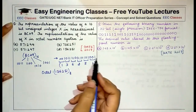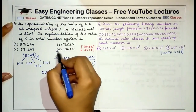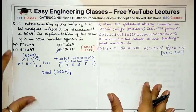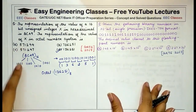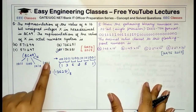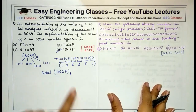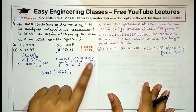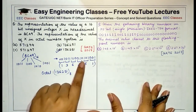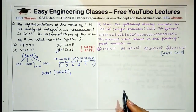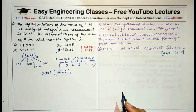The octal representation comes out to be 136251₈, so we write it with base 8. This is a straightforward question. The answer is D. We simply converted hexadecimal to binary, then grouped binary digits from right to left in groups of 3 to get the octal value.